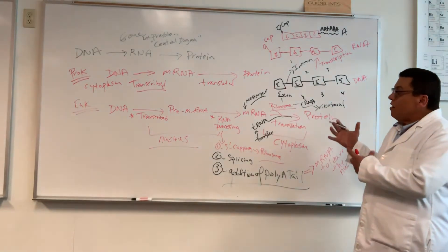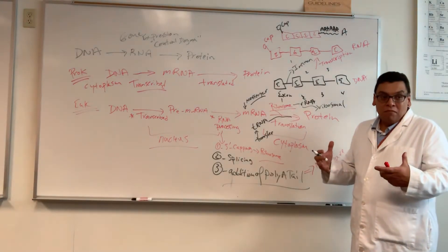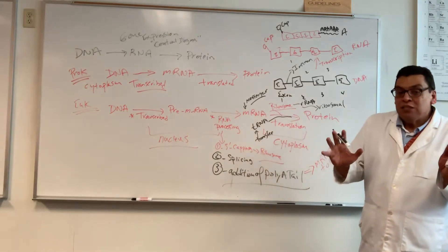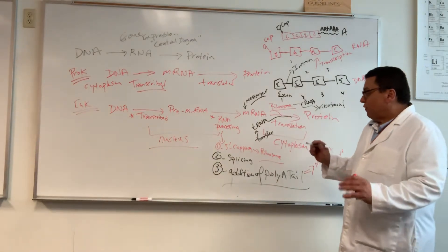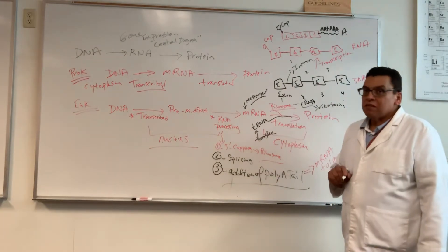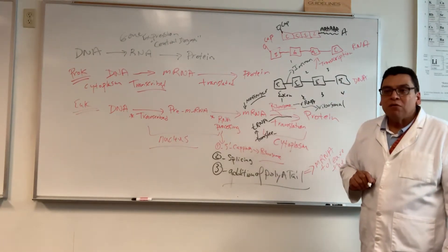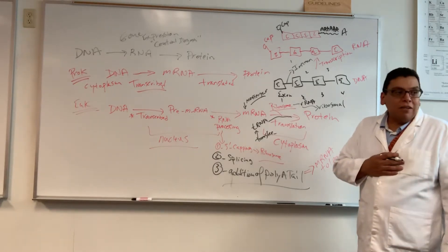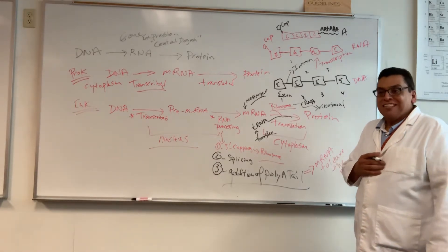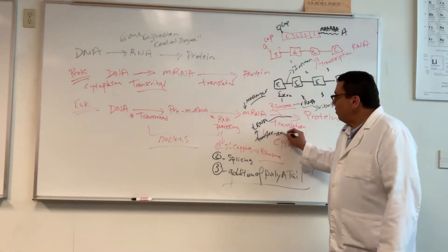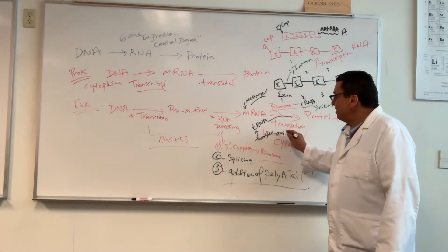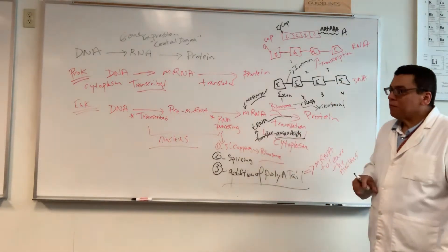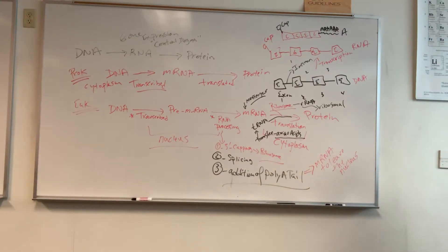Ribosomal RNA is the scaffolding of the ribosome. Transfer RNA is called transfer RNA because it transfers the subunits of proteins — amino acids. There are 20 amino acids. So tRNAs are essentially delivery trucks loaded with amino acids.